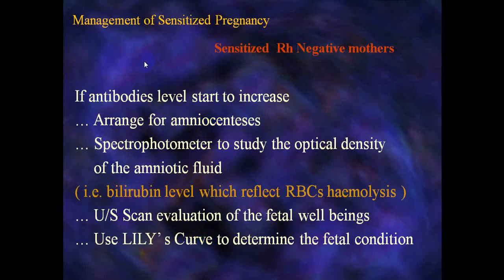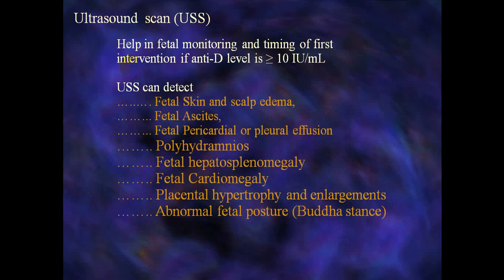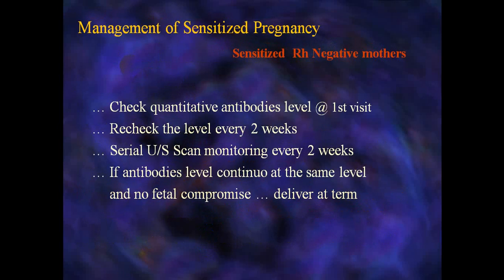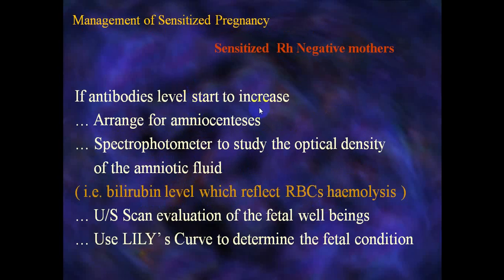Regarding the management of the sensitized RH-negative mother: check quantitative antibody levels at the first visit, then recheck the level every two weeks with serial ultrasound monitoring every two weeks. If antibody levels remain stable and there is no fetal compromise, plan delivery at term. If antibody levels start to increase, arrange for amniocentesis and spectrophotometry to study the optical density of the amniotic fluid — reflecting the bilirubin level which indicates RBC hemolysis.